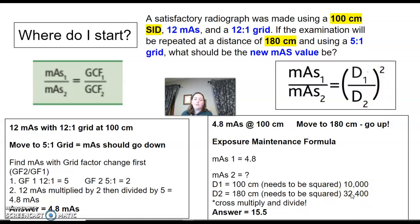So 32,400. And again, all you're going to do is cross-multiply and divide. This is really easy math once you know where to plug your numbers. You're going to multiply the 4.8, multiply down, divide by here, and it'll give you your new mAs. Your new mAs is going to be 15.5 when you've moved from 100 cm to 180 cm. So we moved farther away, our mAs is going to have to increase if that makes sense.